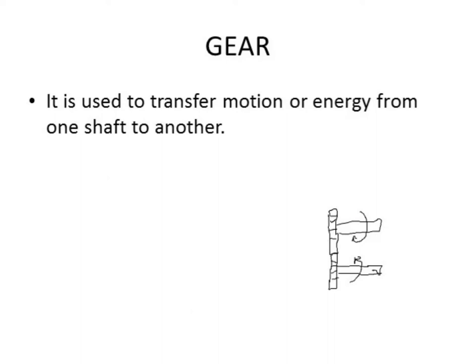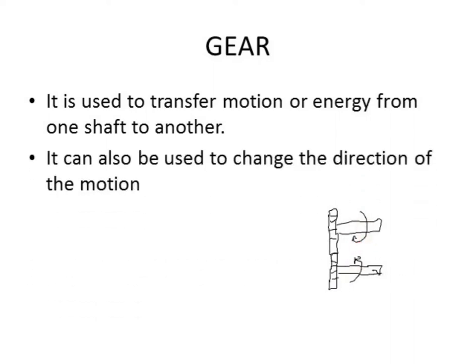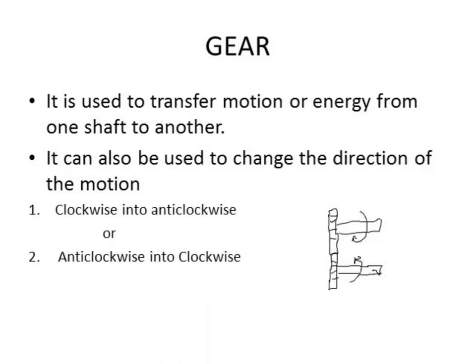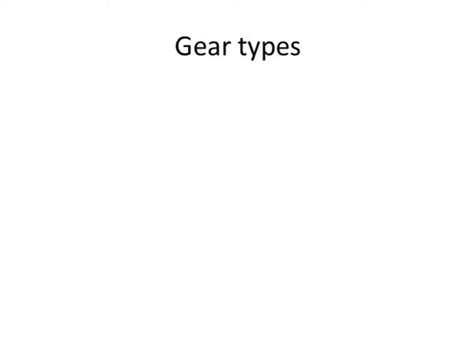We have two shafts upon which gears are mounted. This shaft is rotating in one direction and, because of the gear mechanism, the other shaft would rotate in the opposite direction. Another important thing is that gears can change the direction of motion. For example, a clockwise rotation of one shaft is converted into anti-clockwise rotation of the other shaft, and vice versa.